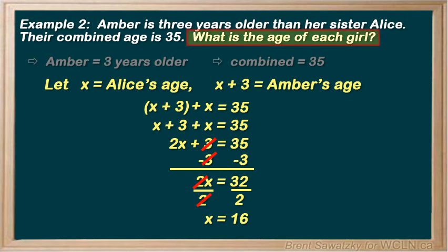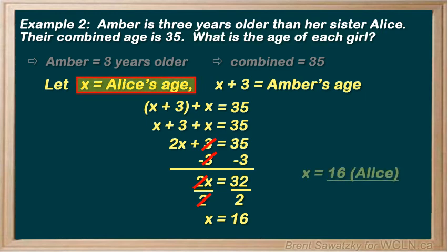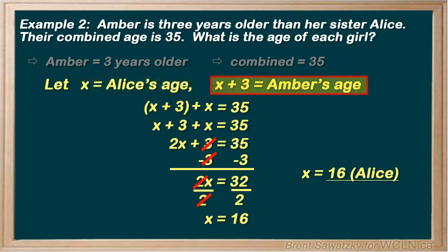We're asked, what is the age of each girl? So, the x equals 16, well, that tells us Alice's age. So, Alice is 16. But we still need to provide Amber's age. And we documented that x plus 3 is Amber's age. So, Amber equals 16 plus 3, or 19.